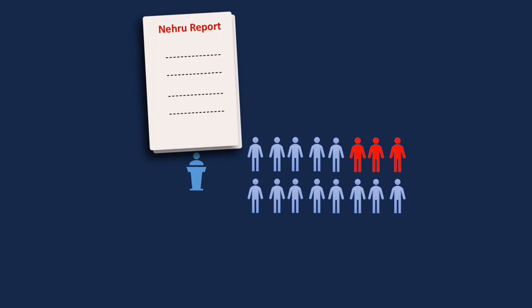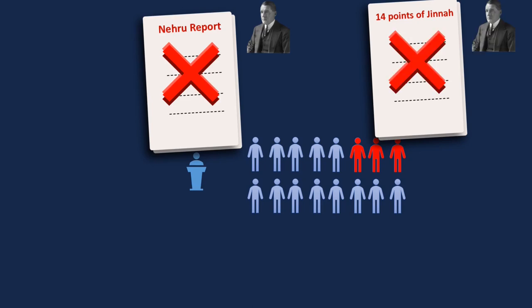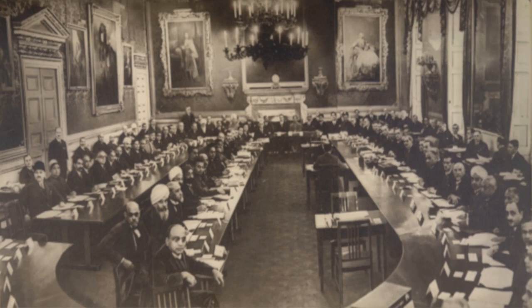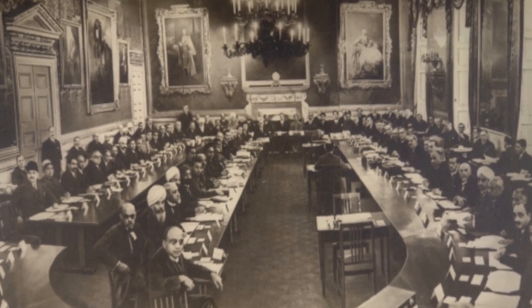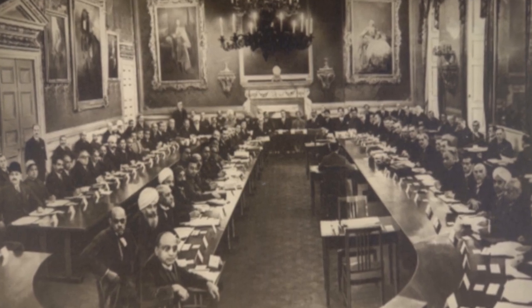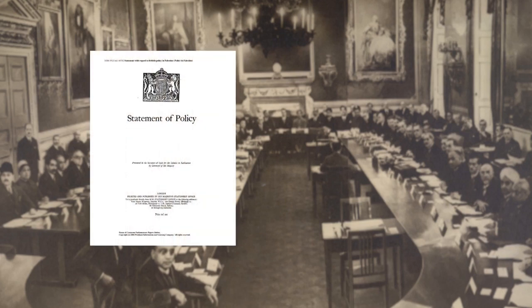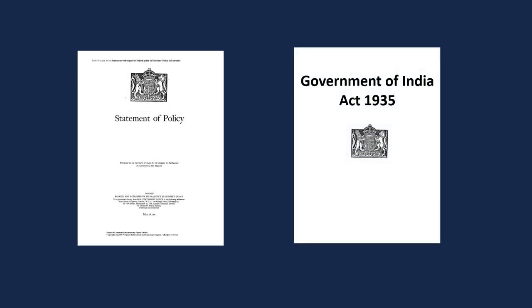In response to the Nehru Report, Jinnah gave his 14 points. Even after all that drama, the report was not accepted by the government. On the recommendation of the Simon Commission, the British government called roundtable conferences to discuss constitutional reforms in India. After three rounds, no conclusion emerged, but a white paper was issued in 1933 detailing the new constitutional reforms, which became the basis of the Government of India Act of 1935.